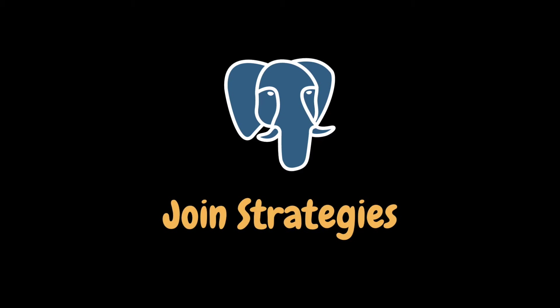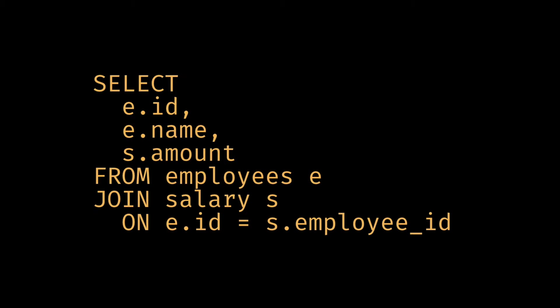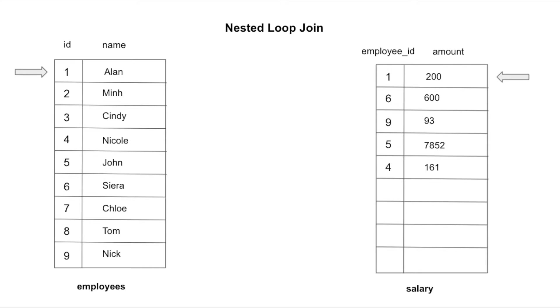The query we're going to work with today is really simple — it selects the id, name, and salary amount from the employees and salaries tables. These two tables are joined together based on the employee id.